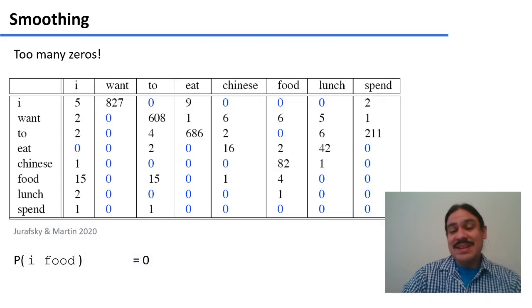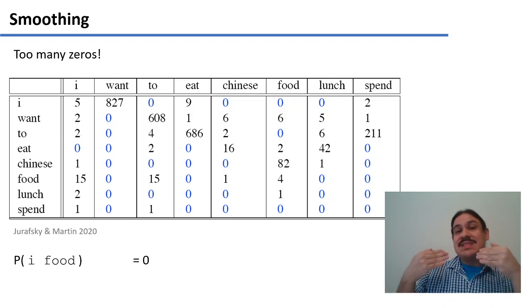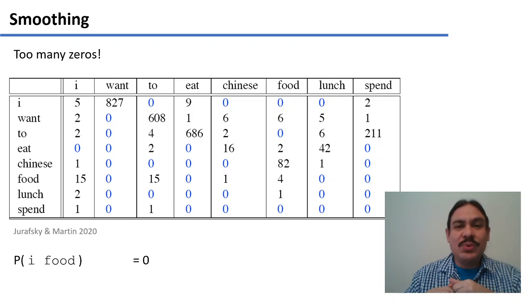And the summary of the problem is this: too many zeros. This is the table that we had from our textbook from Jurafsky and Martin 2020 and from the previous video. We were looking at examples of sentences in a system that would recommend restaurants. So we had a corpus of about 9,000 sentences where users asked questions like, I want to eat Chinese food, and then the system would come up with some recommendation.